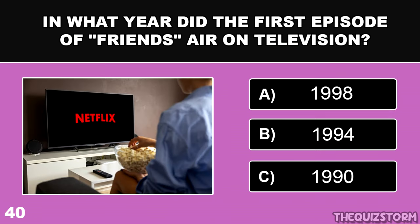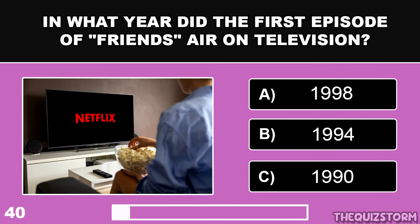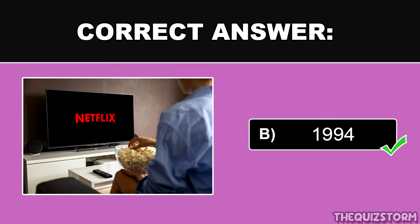In what year did the first episode of Friends air on television? And the correct answer is 1994.